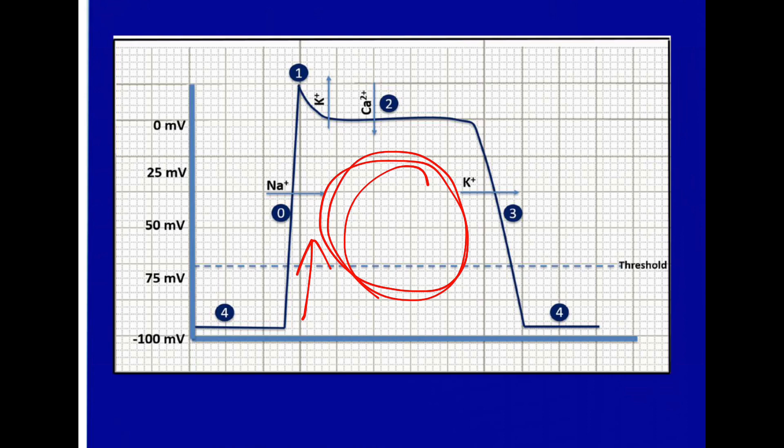Then you get this plateau phase up here when potassium is moving out and calcium is moving in. Then calcium channels close, but potassium continues to move out. Remember, potassium is positively charged, so that will still cause the action potential to go back down to negative until it hits its resting state. And then the sodium-potassium pump and everything begins again.